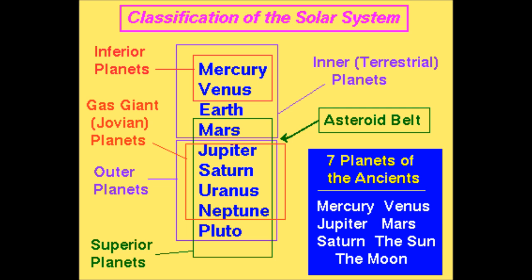The superior planets are Mars, Jupiter, and Saturn, with later additions Uranus and Neptune. They are considered superior because they are further from the Sun than the Earth is.